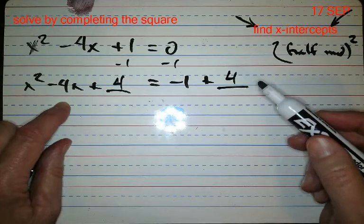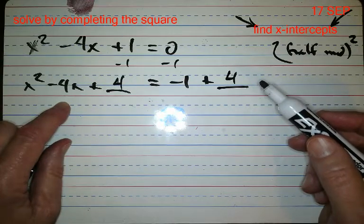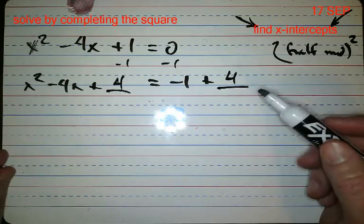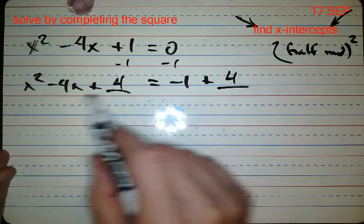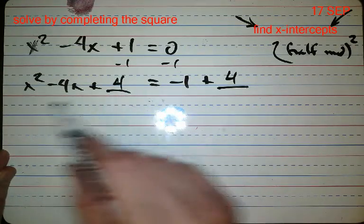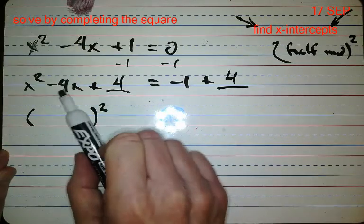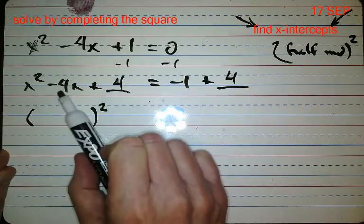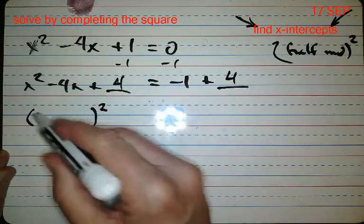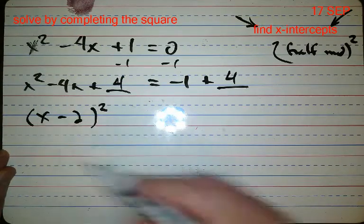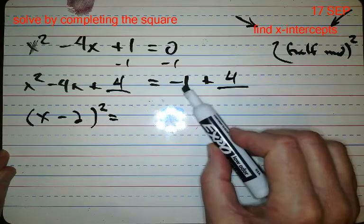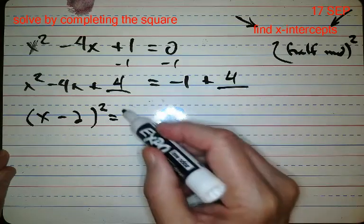Well, super-de-duper, what do I get? Well, I know that I can factor this guy because remember that inside the parentheses it's always half of what this is. So that's x minus two, equals over here, what's negative one plus that's three, right? X minus two equals three.